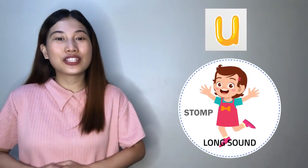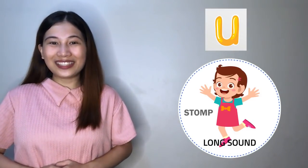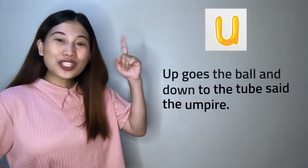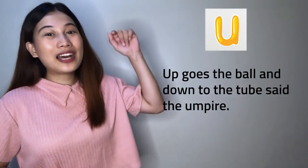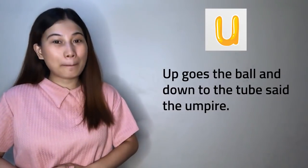This is our last clap and stomp activity, so I hope you get everything right. Listen carefully to the U sound in my sentence. Clap if it is the short U sound and stomp if it is the long U sound. Ready? Up goes the ball and down to the tube, said the umpire.